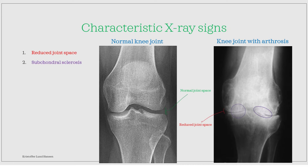Subchondral sclerosis is the second X-ray sign — a hardening of the bone just below the cartilage surface. It occurs typically in the later stages of osteoarthrosis, especially in weight-bearing joints such as the knee, and appears as a more dense, whiter area just below the cartilage surface on X-ray. Osteophytes are bony projections that develop at the edges of the joint, thereby increasing the joint surface area. Subchondral cysts are the last classical sign; they may be hard to see and are not always present — they are fluid-filled cysts that form near the joint surface due to localized necrosis.